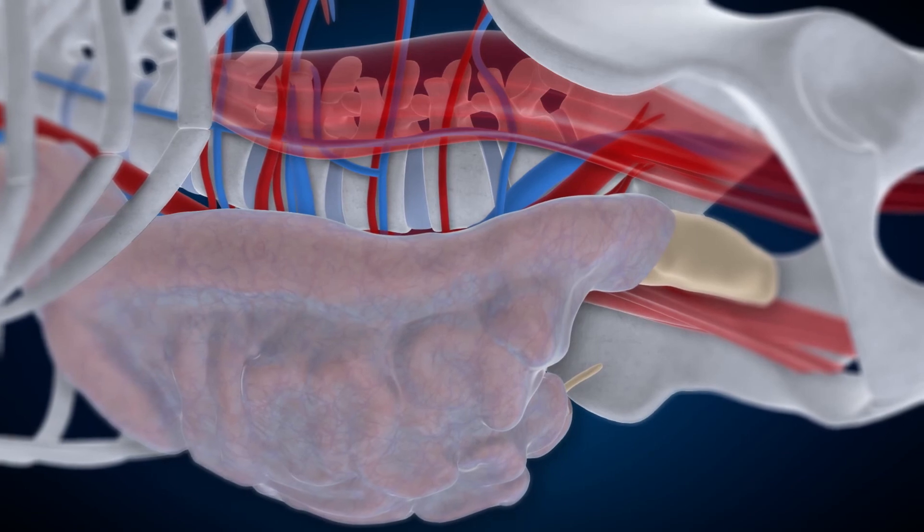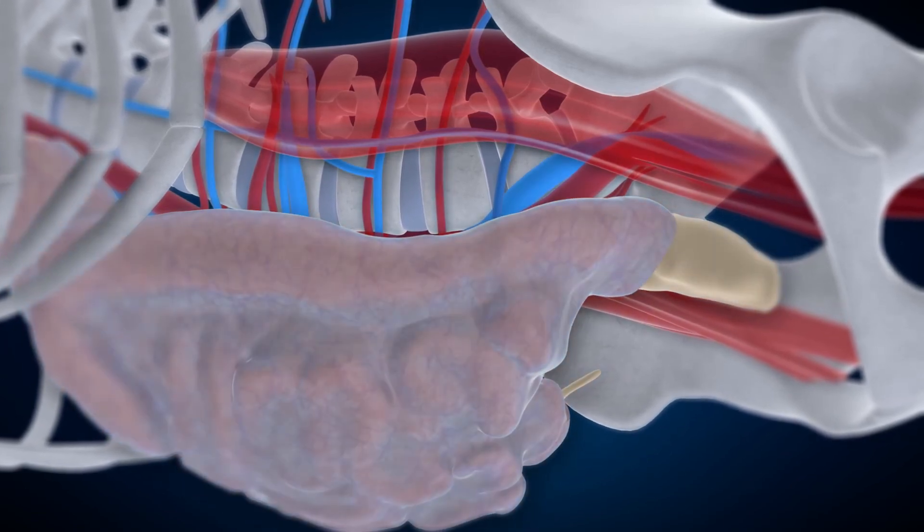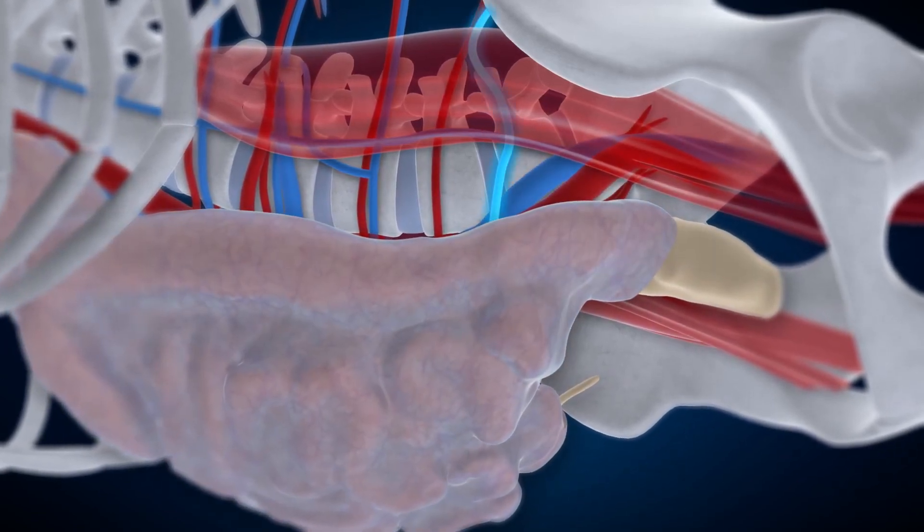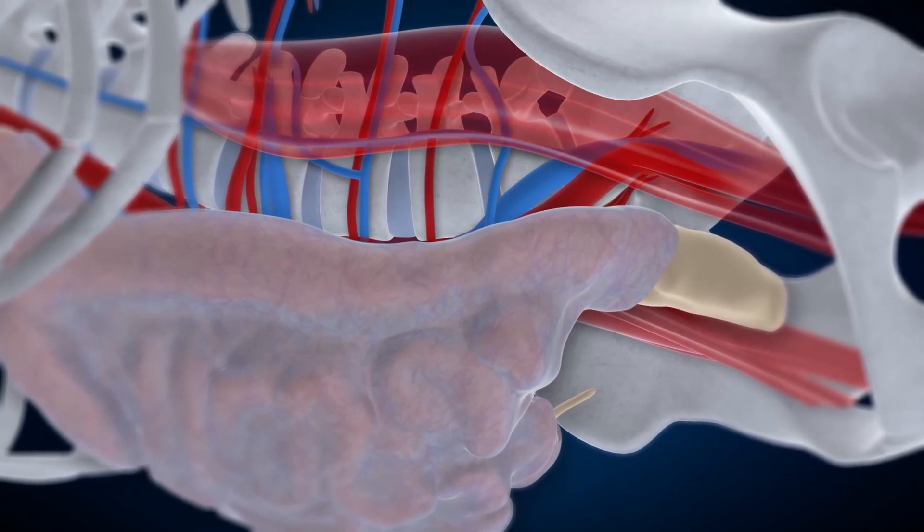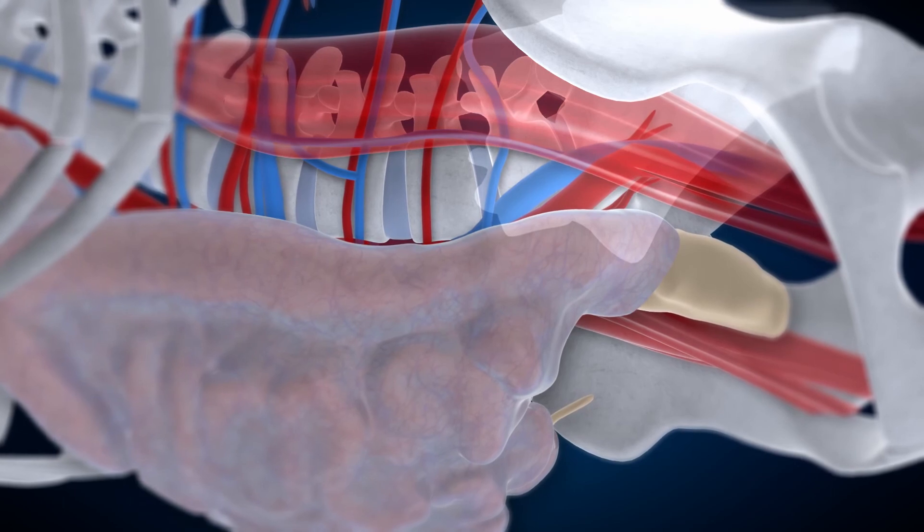An OLIF-25 procedure works away from the peritoneum and interior vascular structures. The iliolumbar vein may be observed in the L4-5 disc space of patients with transitional anatomy. For these patients, direct visualization is recommended to identify iliolumbar vein location.